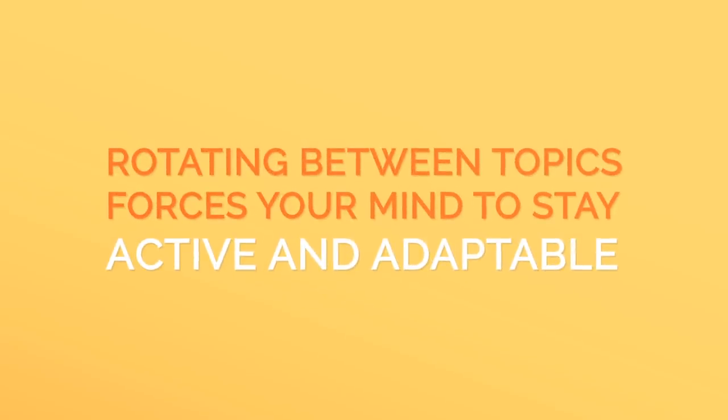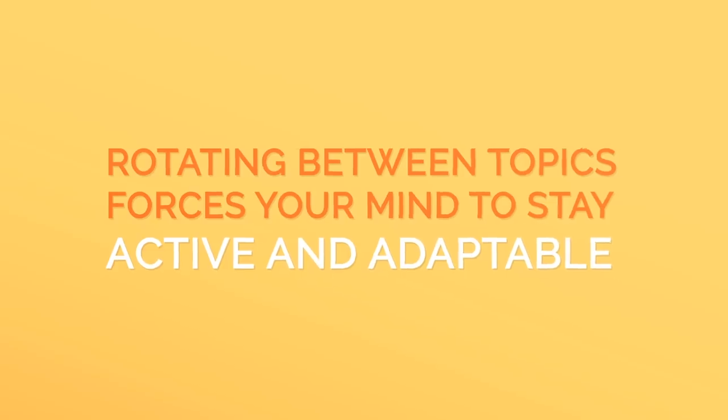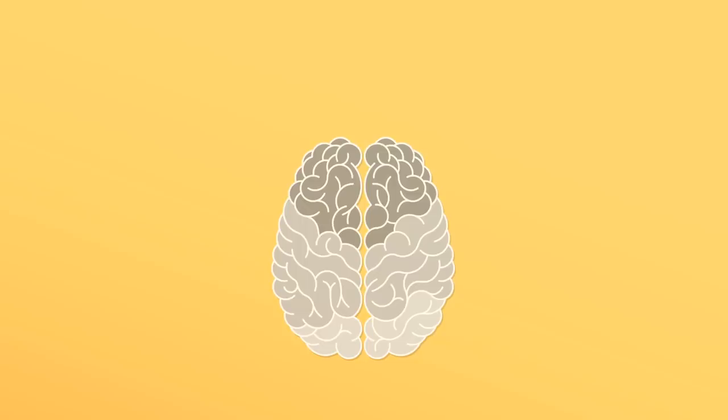Rotating between topics forces your mind to stay active and adaptable. When you only learn one thing at once, your brain slacks off. It pays less attention because things are getting easier and more repetitive. By jumping from subject to subject, you force your brain to completely shift gears each time. These smaller, hyper-efficient chunks are easier to learn from because they offer more of a unique challenge.